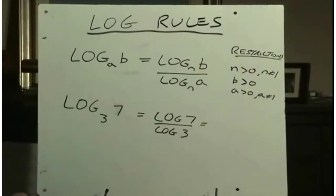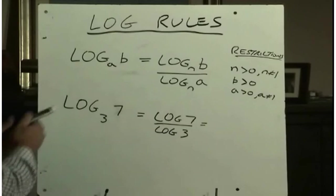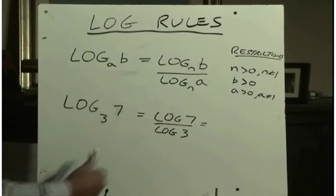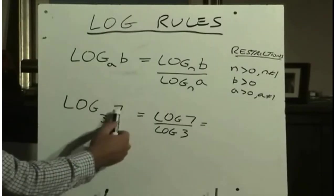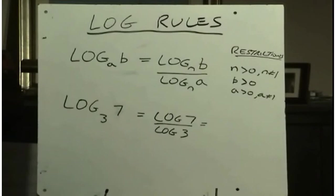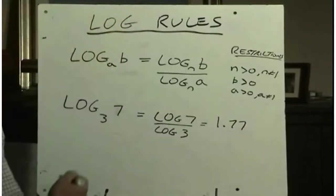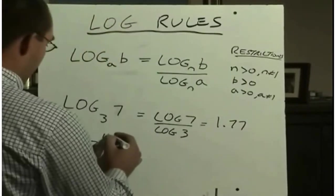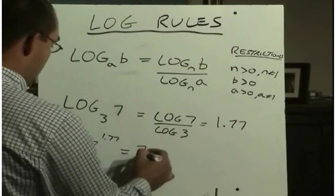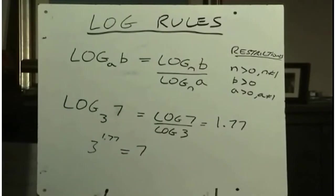So if I wanted to figure out what this answer is now, what the answer to log base 3 of 7 is, I simply need to go to the calculator log 7 and divide by log 3 and I get 1.77. So in other words, 3 to the power of 1.77 will be approximately 7 because I had to round that off. So that's the change of base rule.